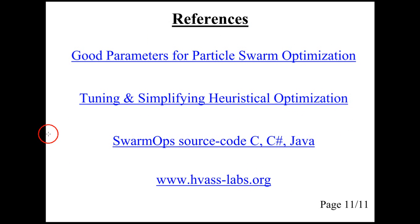There are a number of papers on meta-optimization. If you just need good parameters, then you should check out this paper. It has parameters that are meta-optimized for different optimization scenarios. And this is a PhD thesis, which has detailed experiments and discussions. And Swarmops is source code for C, C-sharp, and Java, and it can all be found on this webpage.